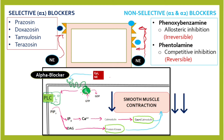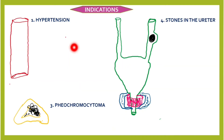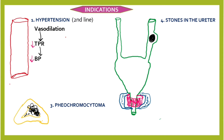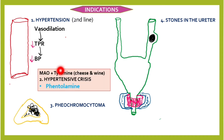The first indication of alpha-1 blockers is hypertension. The mechanism leads to vasodilation, decreasing total peripheral resistance and decreasing blood pressure. Remember, alpha blockers are actually second-line drugs for hypertension.